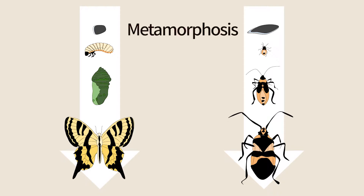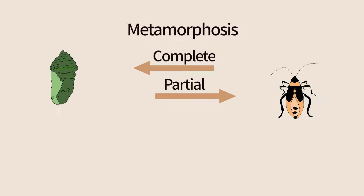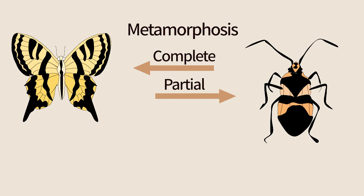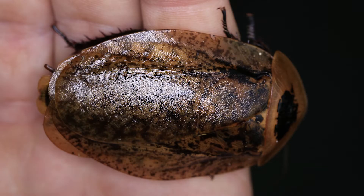Insect metamorphosis appeared and became more complex during evolution, and might have been an important factor in their remarkable success. A few primitive insects undergo no metamorphosis. A large group undergoes partial metamorphosis, and the most modern insects undergo complete metamorphosis.